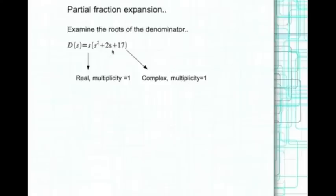How do we know it's a complex root? We compute the discriminant: b² − 4ac. b² is 2² = 4, and 4ac is 4 × 1 × 17 = 68. Since 4 − 68 is definitely less than 0, this polynomial has complex roots.